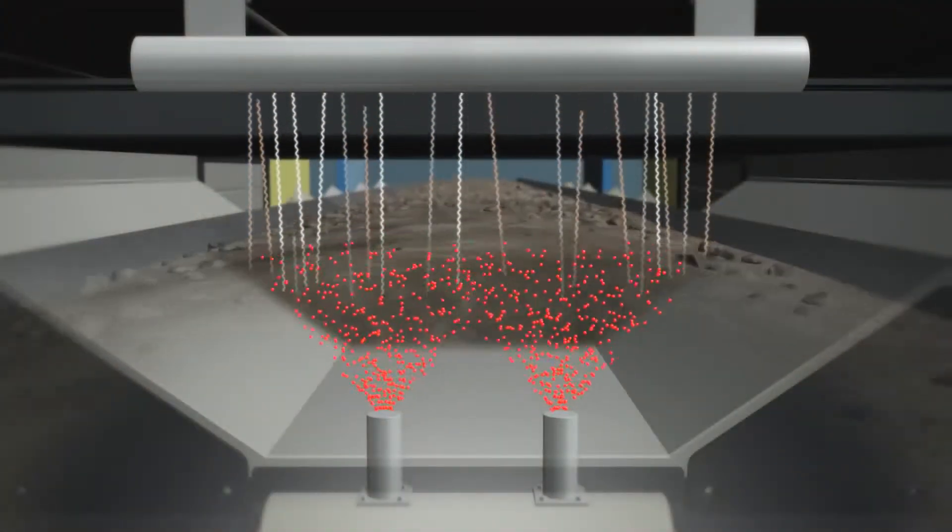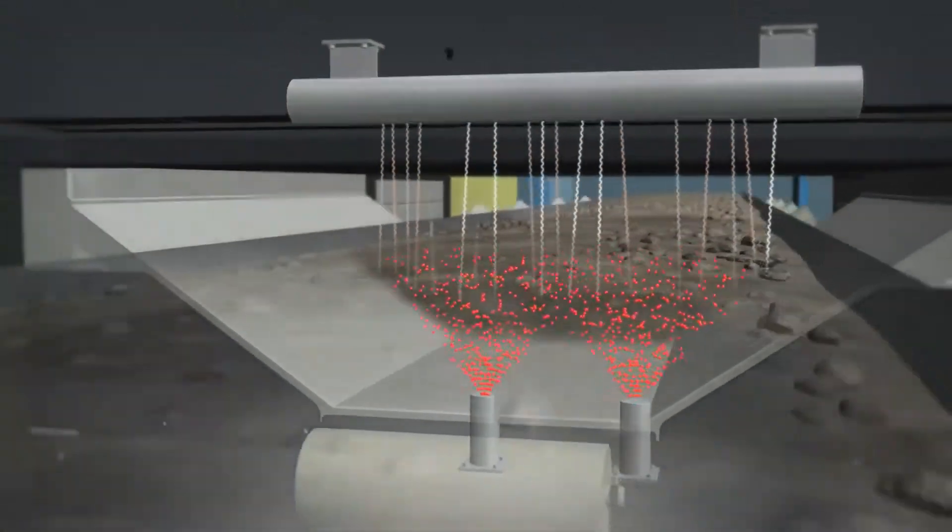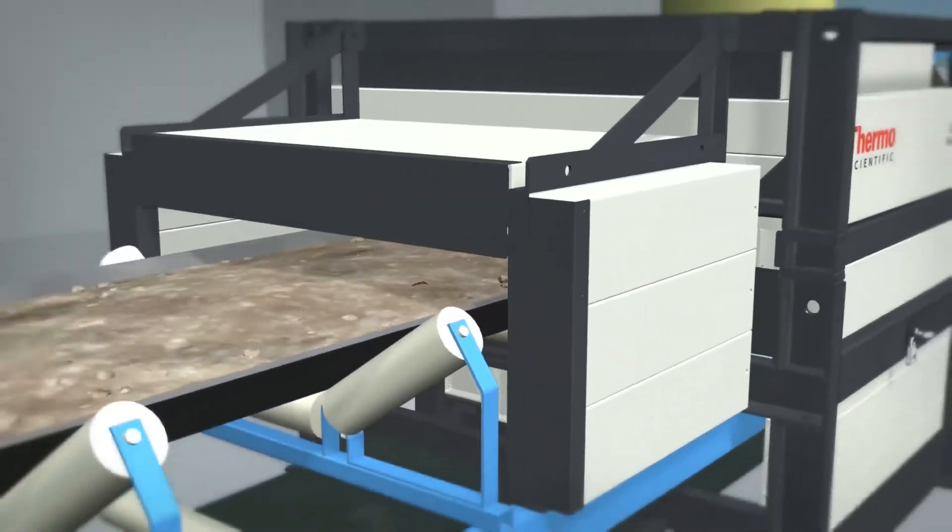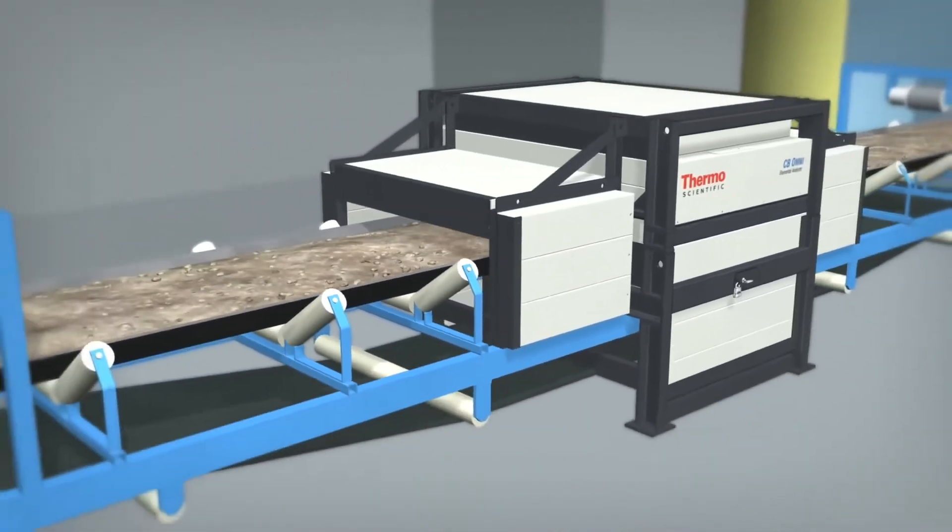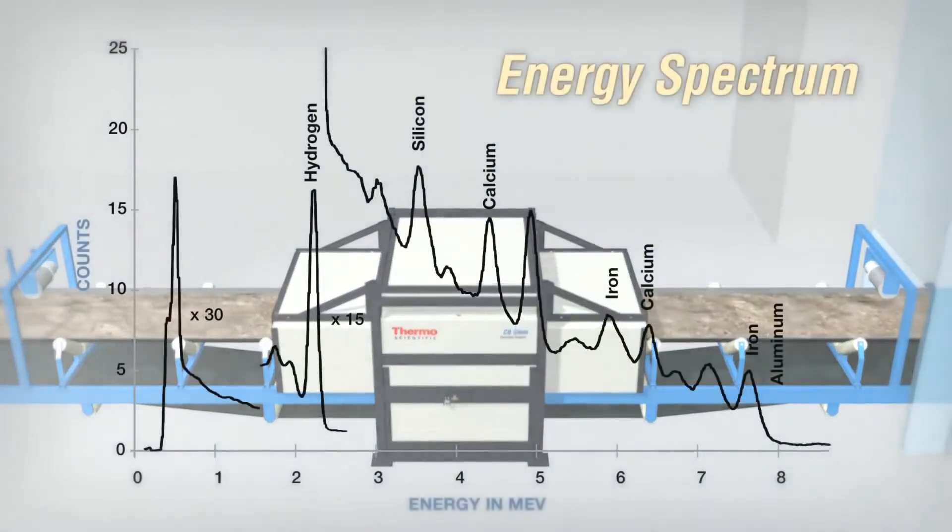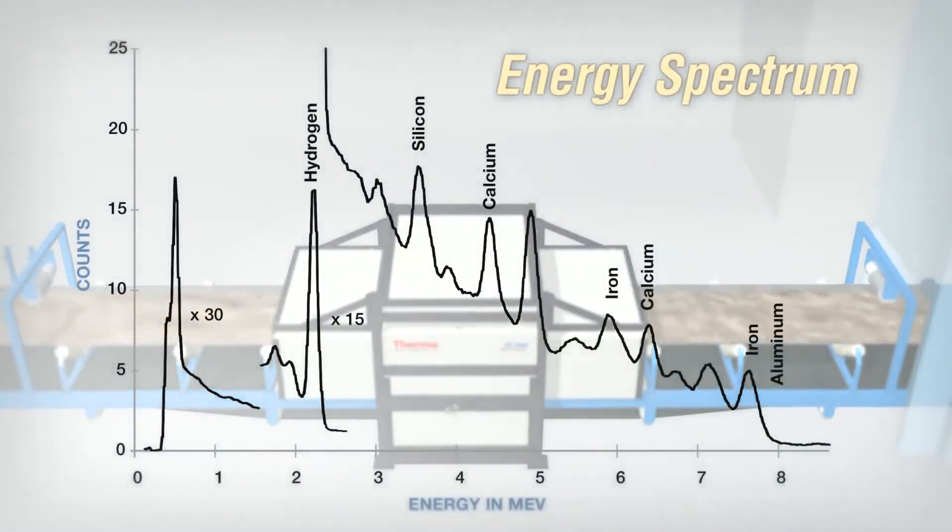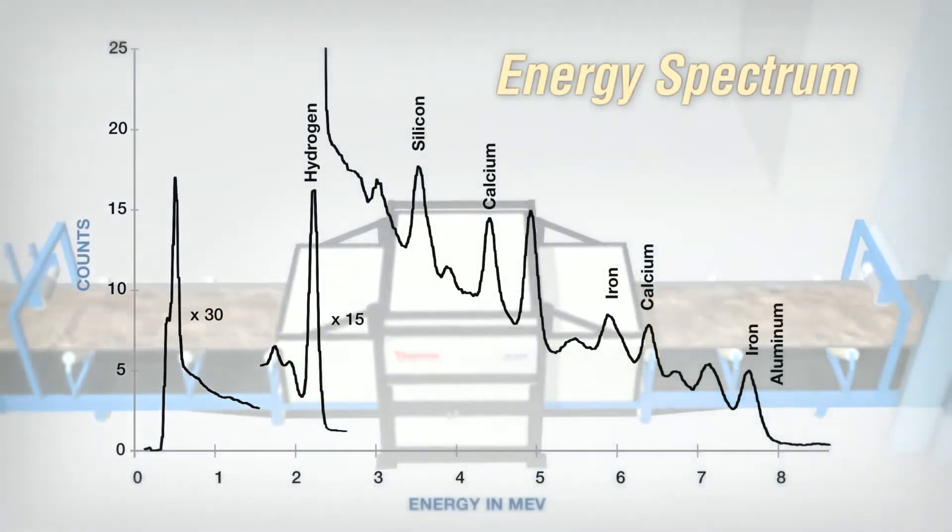The gamma rays are counted and their energies sorted by a detection mechanism. A spectrum of energies is then created and analyzed to give the percent concentrations of each element in the raw materials.